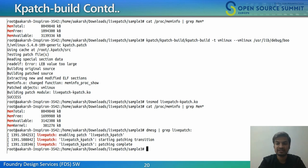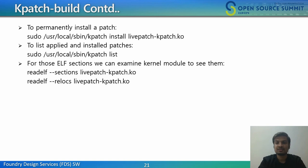kpatch-build generates a new kernel module containing all the livepatches, which is ready to be used. We insert the module using insmod and can check our livepatch function status with dmesg logs — the meminfo kernel functionality got livepatched and gave a sum of untracked kernel memory allocations. For permanently installing a livepatch, we use kpatch install on our patch module. For listing all installed livepatches, we use kpatch list. For those ELF sections, we can examine the kernel module using readelf with --sections and --relocs flags.